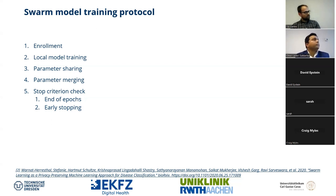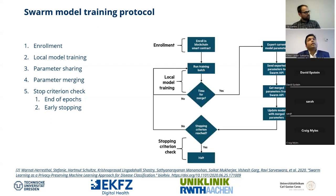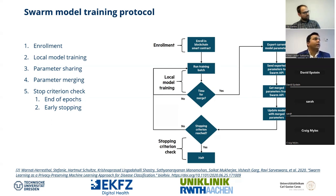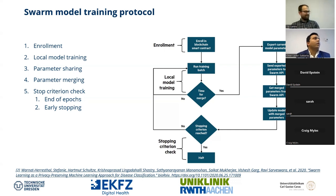Regarding a node that doesn't converge: presently we don't have a mechanism to detect if a node is not converging or not contributing positively and automatically drop it from the learning. That is something we are actively working on — how to identify and address a node that is hurting rather than helping the model.